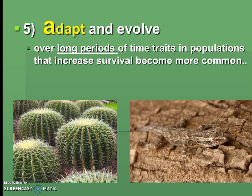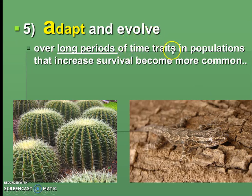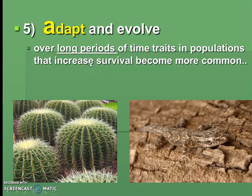A is for Adapt and Evolve. Over long periods of time, traits like storing water for a cactus or camouflage for a lizard become more common in a population because they allow those organisms to survive — in a hot desert or away from predators. Adapt means being able to survive better because of some trait. Note that 'long periods of time' is underlined — you could highlight that.